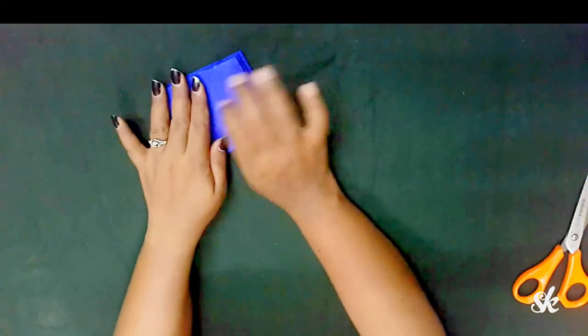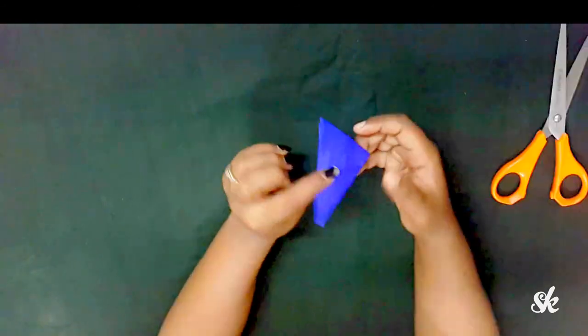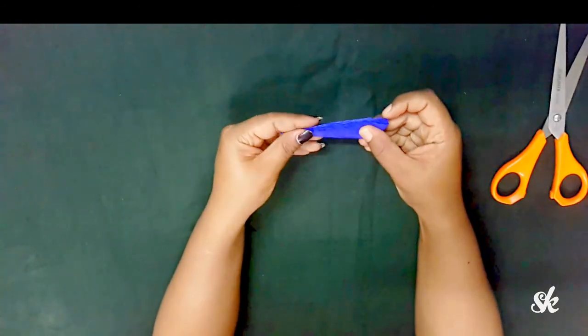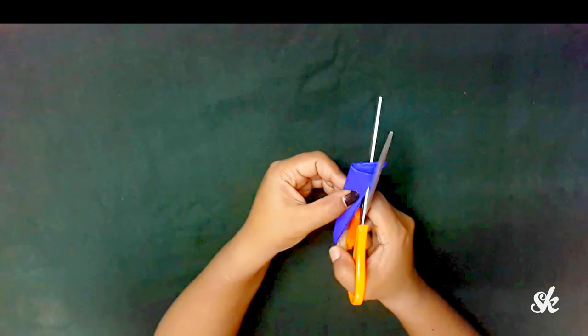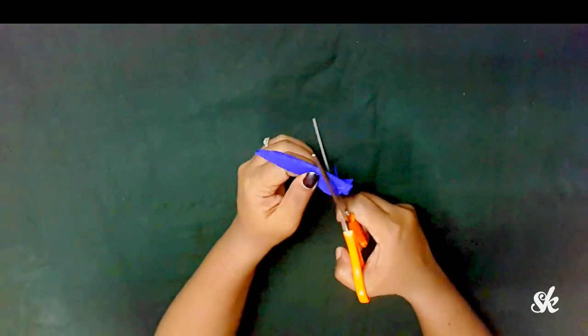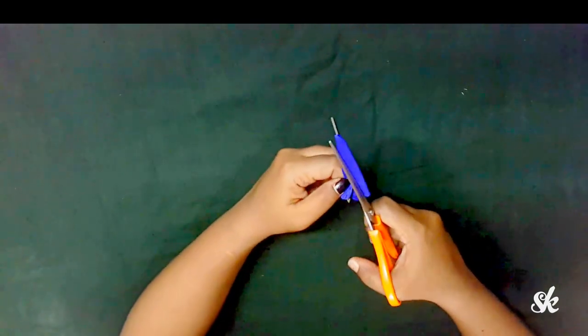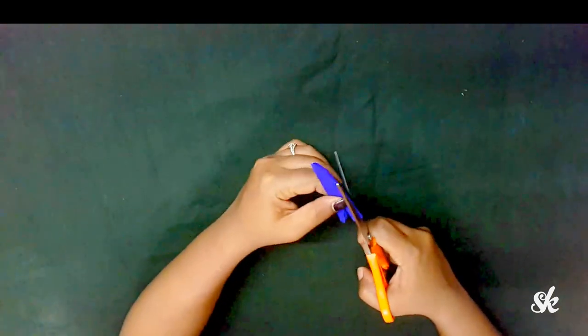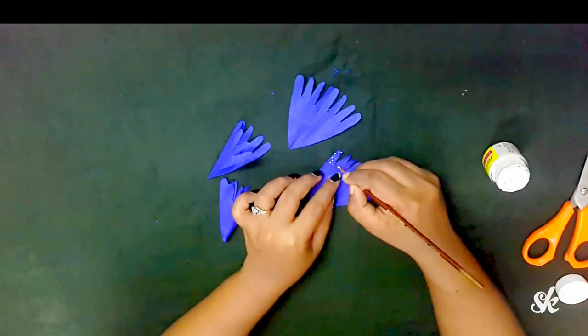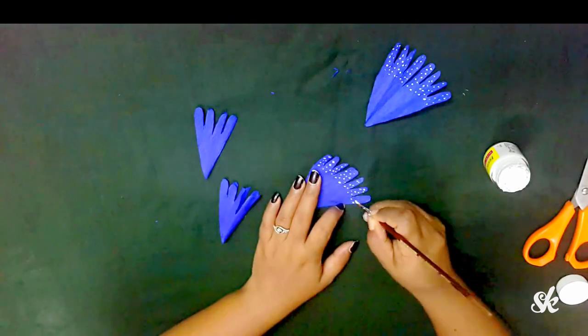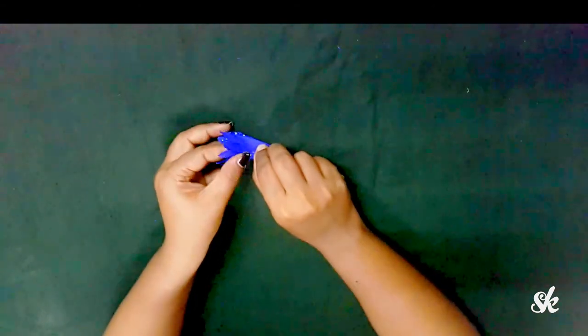Now unwind the petals. Adding some beauty to our petals, I'm using white acrylic color for that. Apply some glue to any corner side of your petal and then roll it up to form a bell shape, see like this.